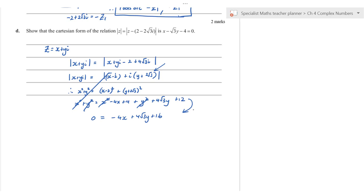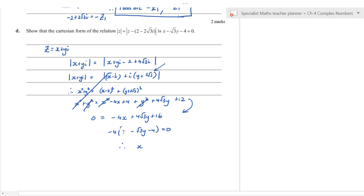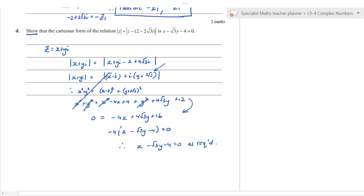After cancellation: 0 = −4x + 4√3 y + 16 (corrected). Factoring out −4: x − √3 y − 4 = 0 as required. Only about 16% of students got full marks for this in the actual exam. If you don't skip steps and answer the question as given, you will get it right.